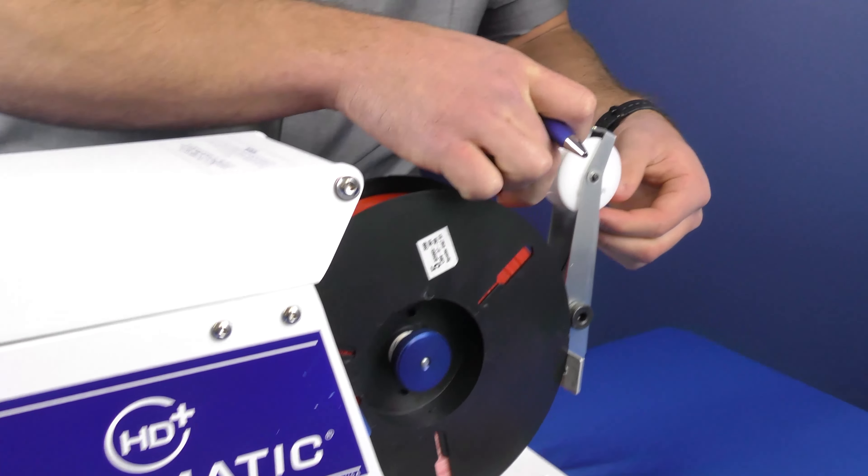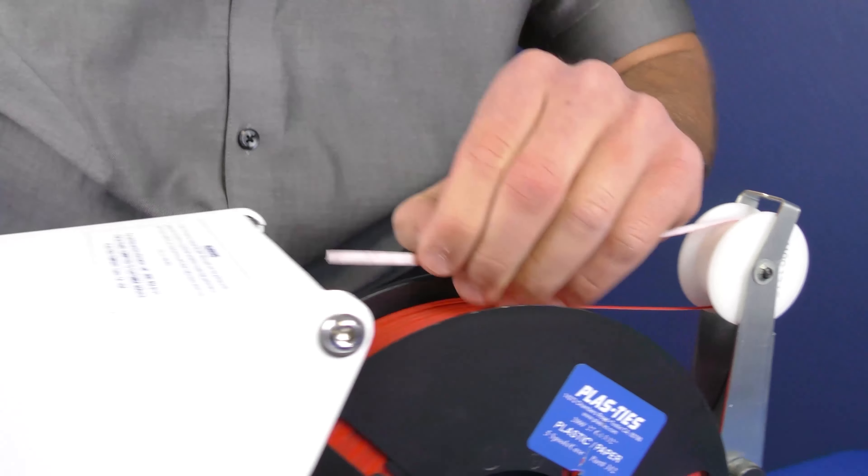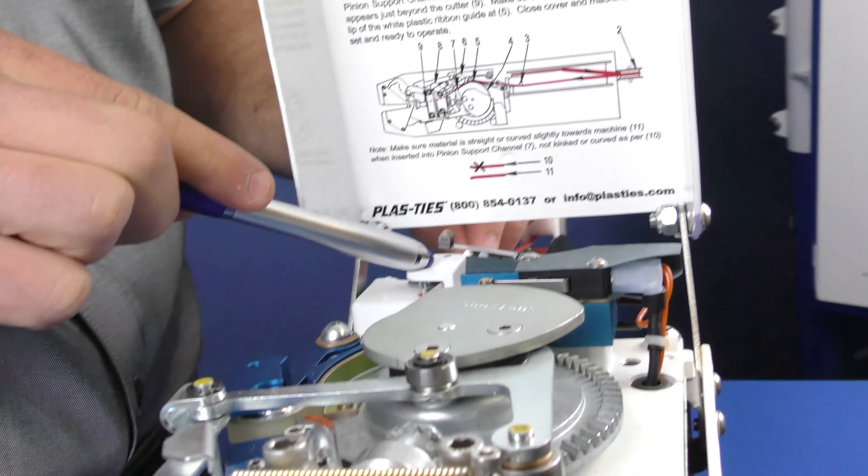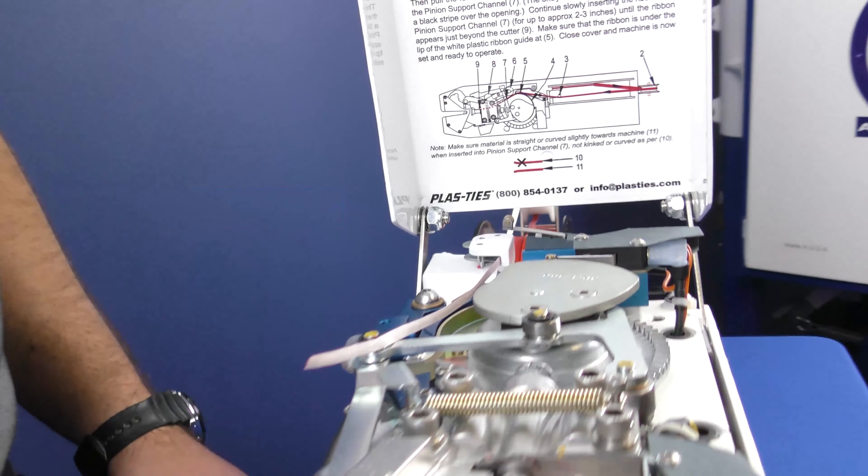Alimente el material debajo y sobre la rueda en la parte trasera de la máquina. Abra la tapa y alimente el material a través del ensamblaje NOVAC. Jale unos centímetros de material a través del conjunto. Compruebe un corte limpio al final de la línea.